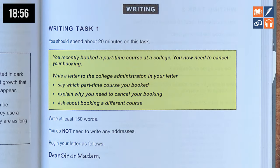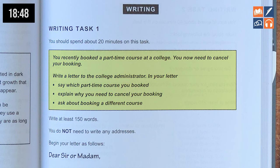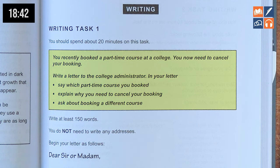So you recently booked a part-time course at a college, you now need to cancel your booking. Write a letter to the college administrator. In your letter: say which part-time course you booked, explain why you need to cancel your booking, and ask about a different course.